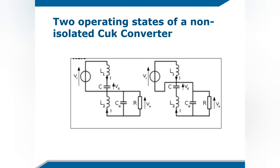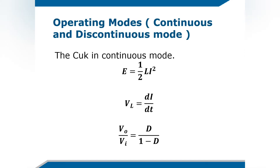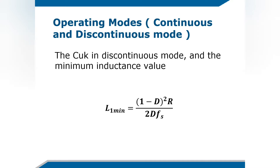The two operating states of a non-isolated choke converter are shown in this figure. This is the formula used to calculate the parameters in the continuous conduction mode. We have the output voltage formula and the duty cycle formula. In continuous mode, the minimum inductance value is calculated using this formula.